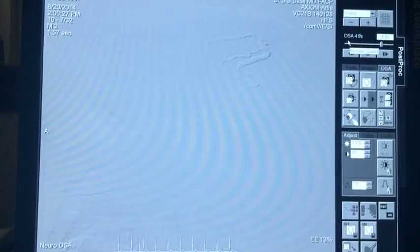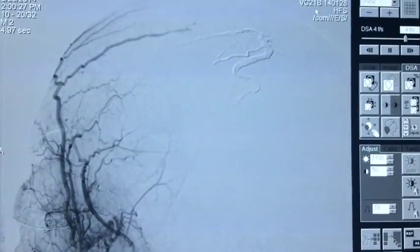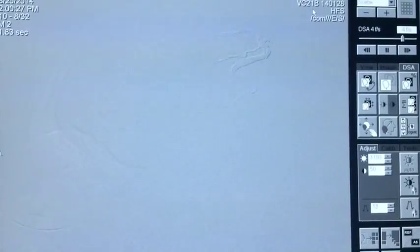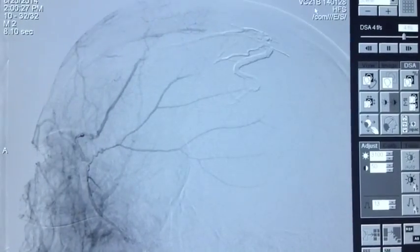We can see there is absolutely good control of this fistula, complete cure of this fistula with a good Onyx cast. And now we can see the fistula is not filling at all. It is completely embolized. Part of the vein, the fistula, as well as part of the artery is taken care of. This is how we embolize this lesion.